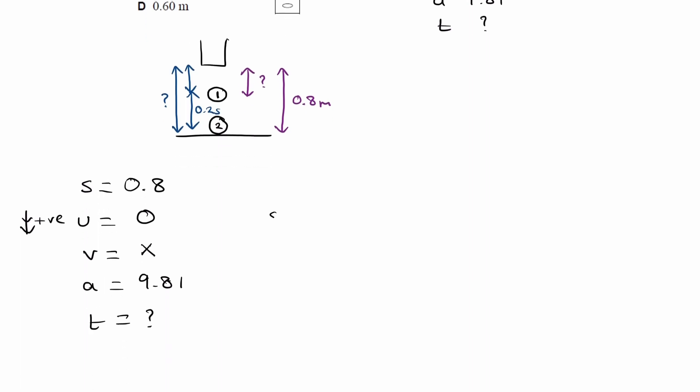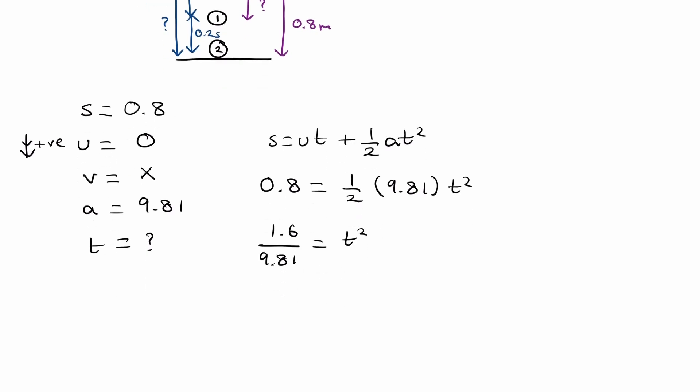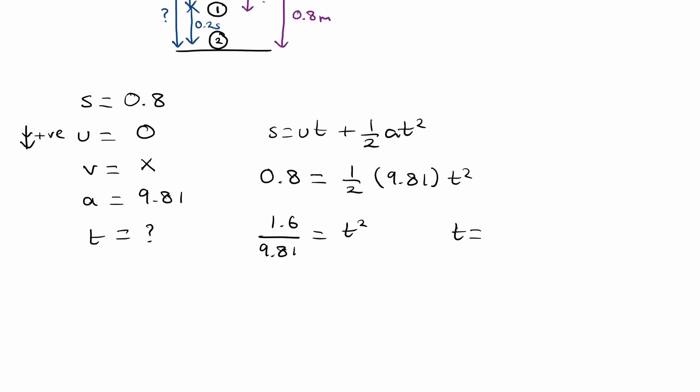So we can use s equals ut plus a half at squared. The distance fallen is 0.8. Ut is just going to be 0. So this is then a half times 9.81 times t squared. So if I bring the two to the left, this becomes 1.6. Then divide by the 9.81. This is now t squared. Square root. And we get 0.404 seconds.